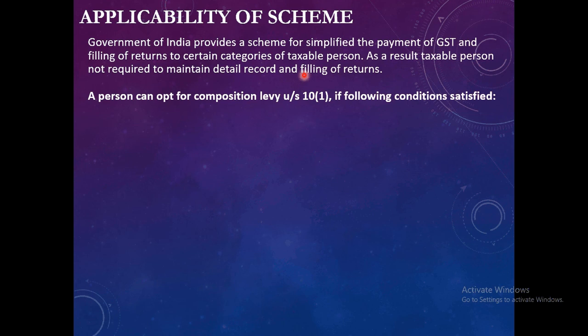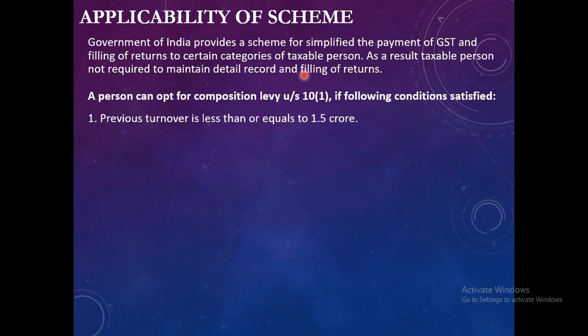So who gets this scheme — who can opt for this scheme? Under Section 10(1), there are certain conditions. After satisfying those conditions, a person can opt for composition levy. The first condition is that in the previous year, that person's turnover — aggregate turnover — must be less than 1.5 crore.